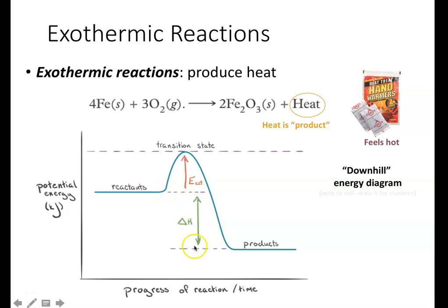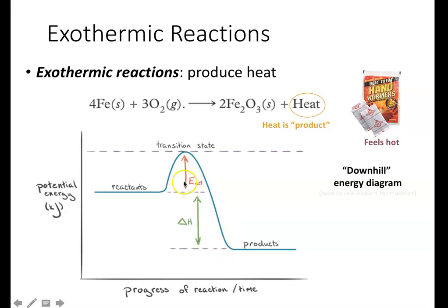The overall energy of an exothermic reaction is going down — it's a downhill energy diagram with a smaller activation energy. This is typical but not always the case: endothermic reactions tend to have a higher activation energy than exothermic ones. The difference between the reactants and the peak of the hill — called the transition state — is the activation energy. Make sure you understand the difference: the heat of reaction is the difference in energy between reactants and products, while the activation energy is the difference between reactants and the transition state.